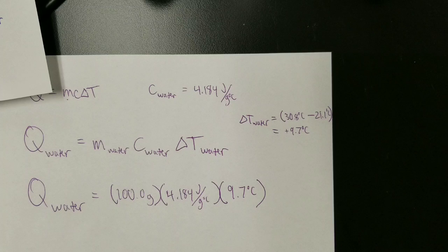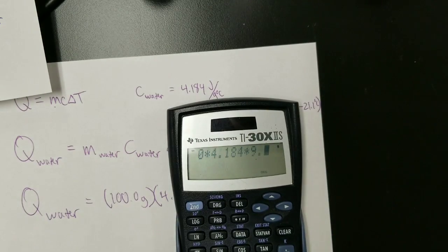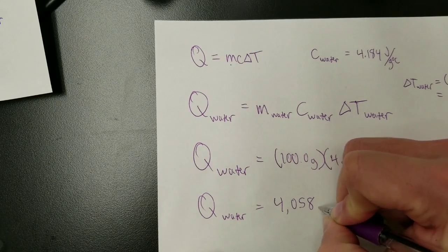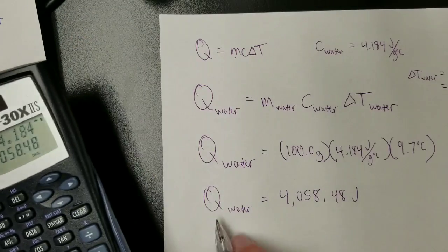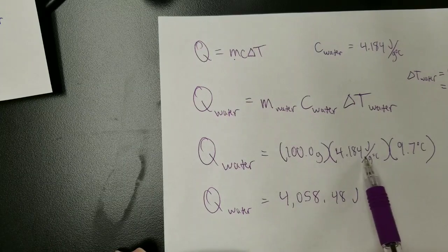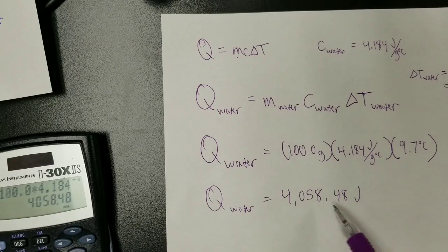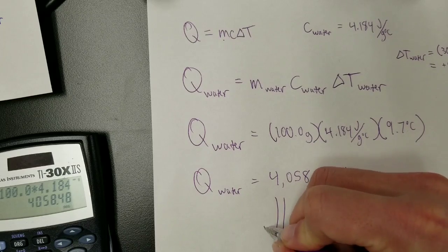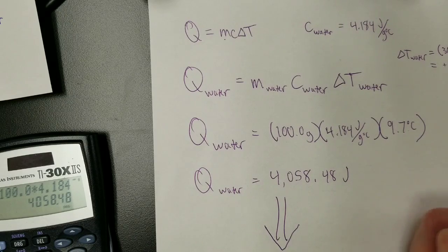Let's see, what's that come out to? 100.0 times 4.184 times 9.7. So Q water equals 4058.48. That's what came out of the calculator. And what are the units? Grams cancel grams. Degrees Celsius cancel degrees Celsius. Joules. Because Q is energy. Technically it should be rounded, but we're not done with the question yet, so I'm not going to round until the end. So if Q of water equals that, that means the water gained this many joules. Therefore, Q metal equals negative 4058.48 joules.